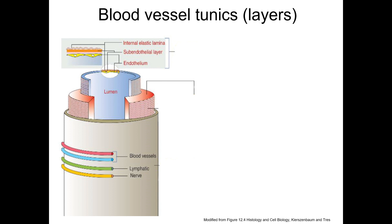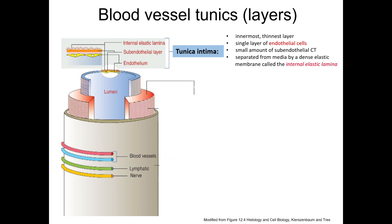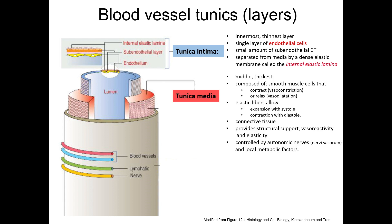Like the heart, blood vessel walls consist of three tunics or layers. First, the innermost layer is called the tunica intima. It consists of an endothelial lining which is continuous with the endocardium of the heart. Similar to the endocardium, the tunica intima has a subendothelium comprised of connective tissue and it sometimes contains a layer of elastic fibers called the internal elastic lamina. The middle layer, the tunica media, is the thickest and consists mainly of smooth muscle cells with collagen fibers, elastic sheaths, and extracellular matrix.